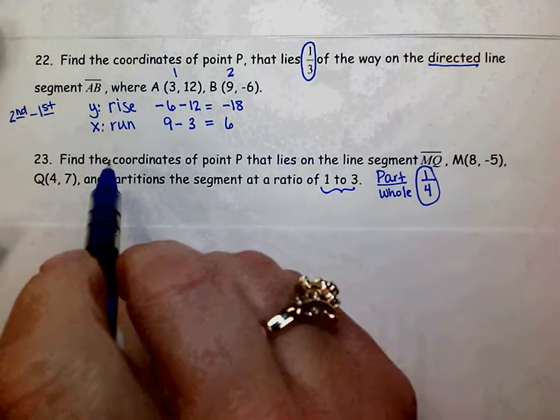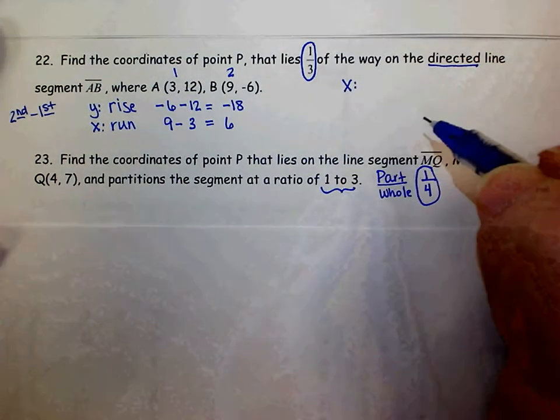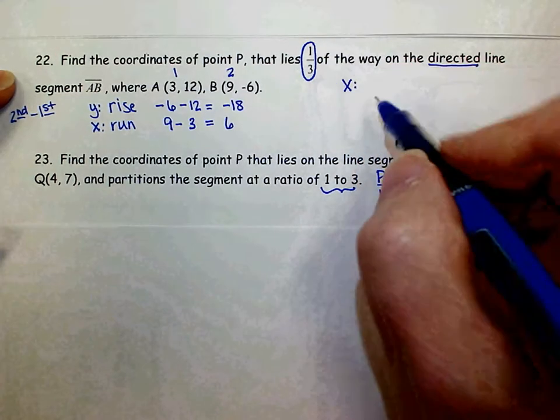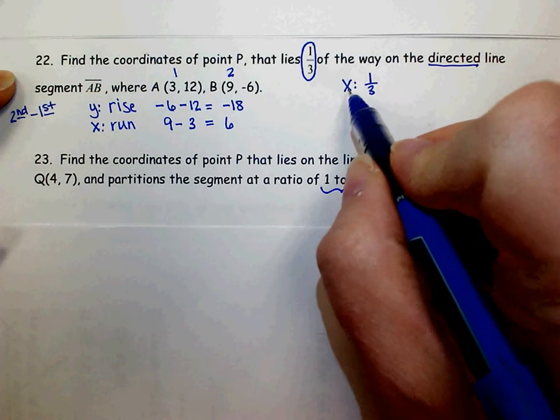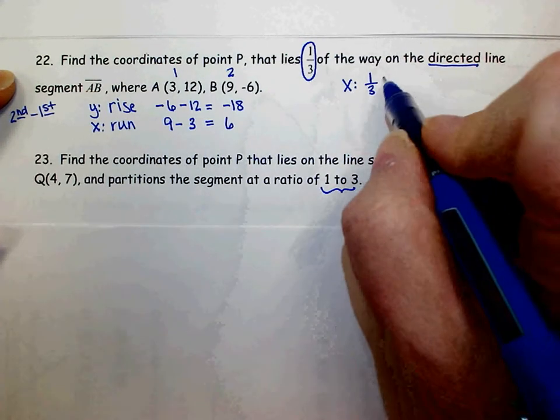After I find my rise and run, I'm ready to find the x and y-coordinates of point P. To find my x, I want my fractional part of my run. Since I'm doing x, look at my run. So I want one-third of the run, which is 6.